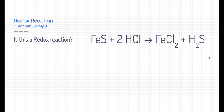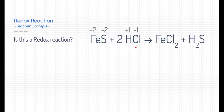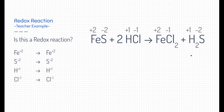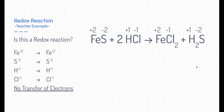Here is one more example — let's test if it's a redox reaction. Iron two sulfide has a plus two iron and a negative two sulfur. Hydrochloric acid has hydrogen at plus one and chlorine at minus one. This is a double replacement reaction — the partners rearrange, but their charges stay the same. Iron stays plus two, chlorine stays minus one, hydrogen stays plus one, and sulfur stays minus two. None of the charges are changing, so there's no transfer of electrons. This is not a redox reaction. Double replacement reactions typically are not redox reactions.